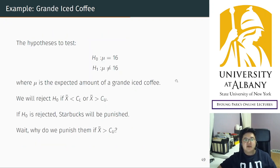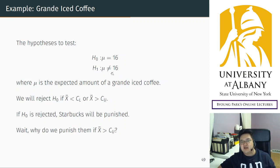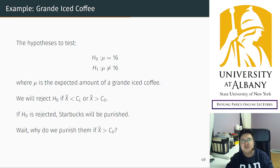We set the hypothesis this way: the null hypothesis is μ = 16, meaning the expected amount is 16 ounces — the correct amount — so Starbucks is honest. The alternative hypothesis is μ ≠ 16. This is a typical hypothesis testing framework we considered.